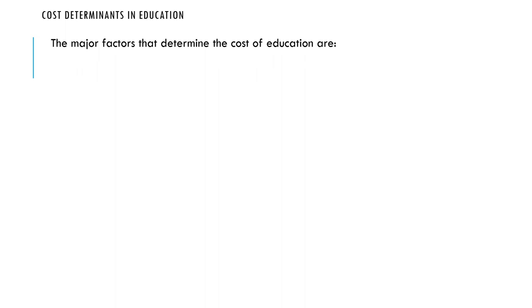What are the factors that determine cost in education? The first major one is the average class size. The average class size would determine the cost of education. If at a particular level, say primary school, you are saying not more than 40 people in a class, it means you have a maximum seating capacity of 40 in a class.